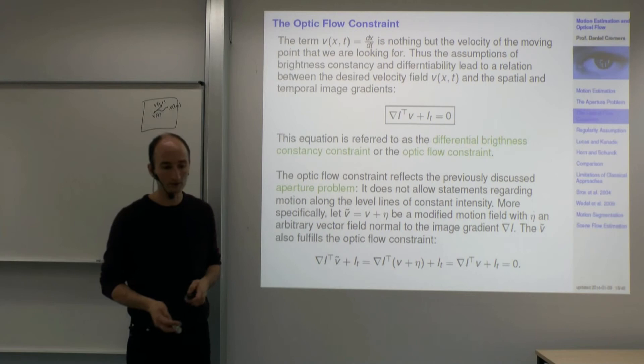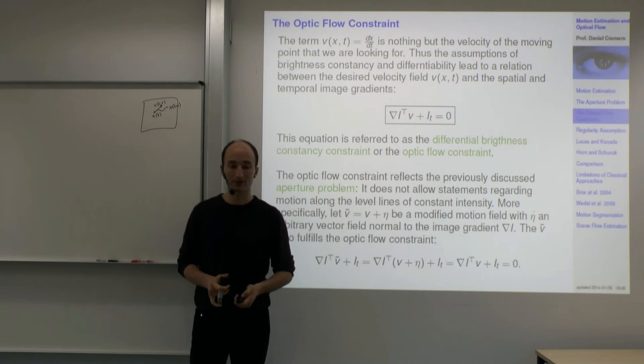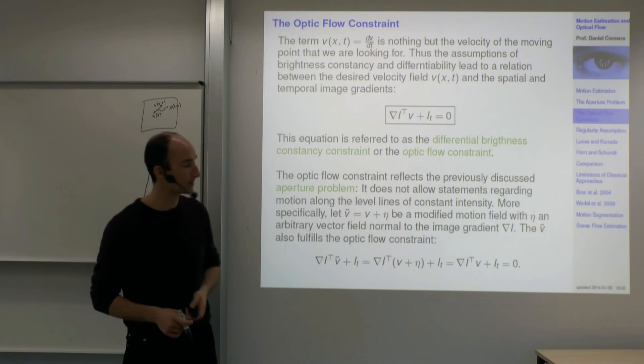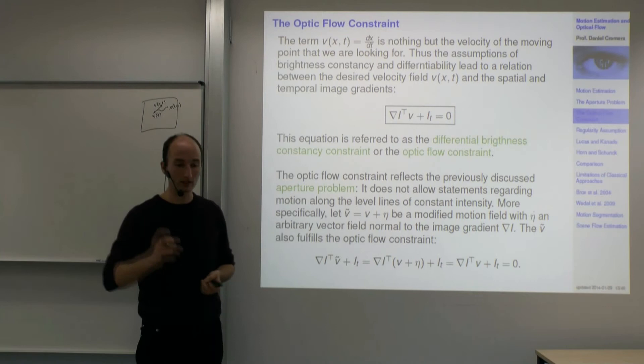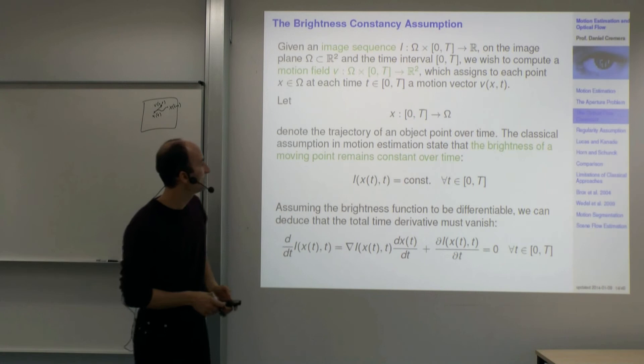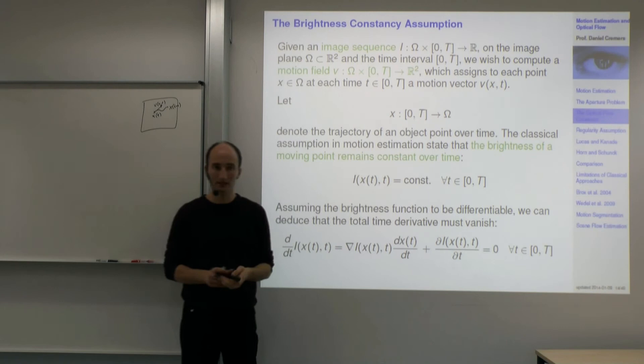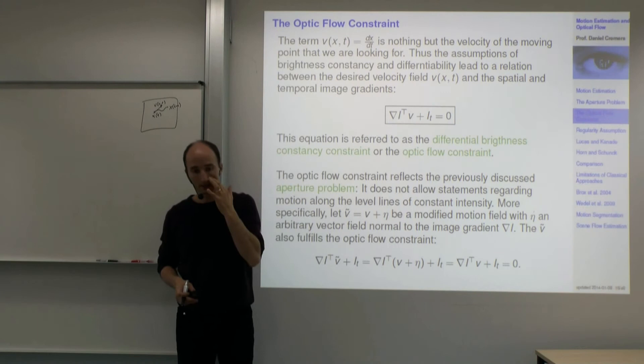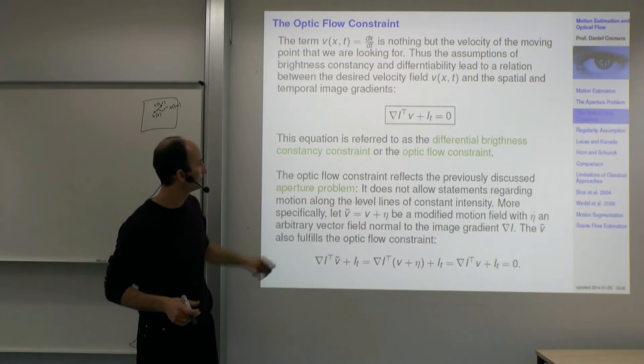This constraint is very famous — it's called the optical flow constraint, or sometimes the brightness constancy constraint equation (BCCE) or the differential brightness constancy constraint. The brightness constancy constraint says the brightness is constant; its derivative gives the optical flow constraint equation ∇I^T · v + I_t = 0.